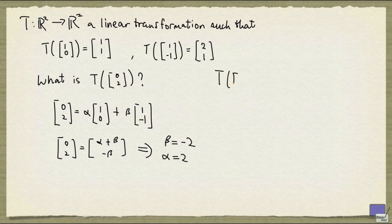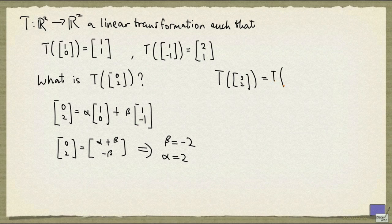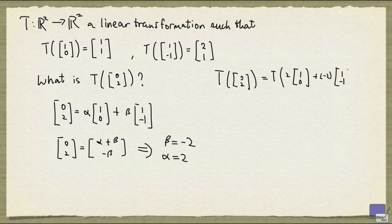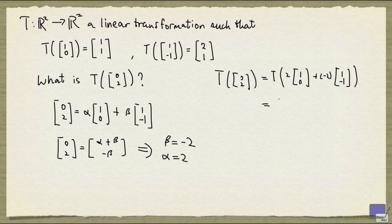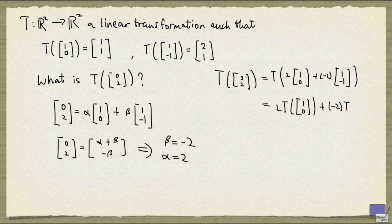So we can now write T([0,2]) as T(2·[1,0] + (-2)·[1,-1]). And since T is a linear transformation, I can rewrite this as 2·T([1,0]) + (-2)·T([1,-1]).